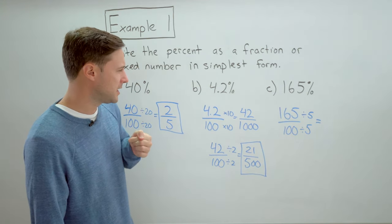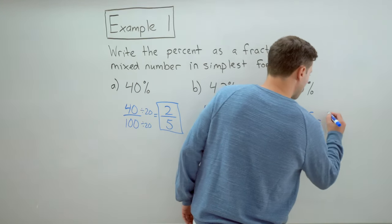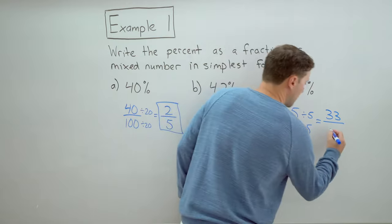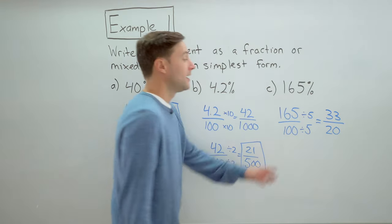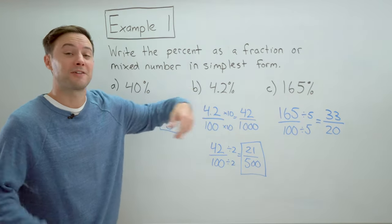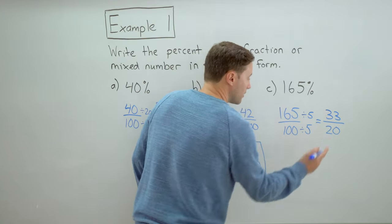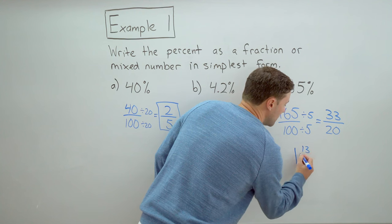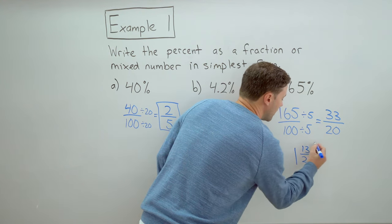So one hundred sixty five divided by five. Let's see. Thirty would be one fifty. So thirty three over twenty. We've got an improper fraction still. So last step, let's change that into a mixed number. Twenty goes into thirty three one full time. And I have thirteen over twenty left over.